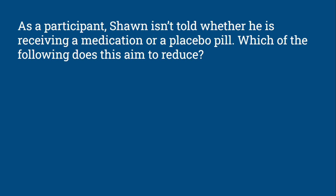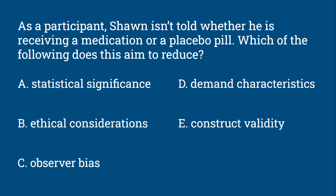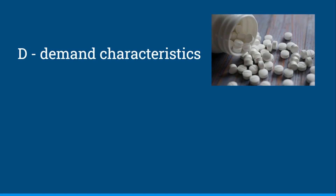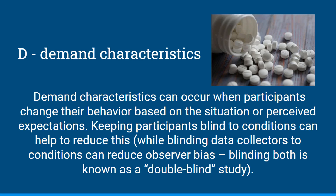As a participant, Sean isn't told whether he's receiving a medication or a placebo pill. Which of the following does this aim to reduce? Does it reduce statistical significance, ethical considerations, observer bias, demand characteristics, or construct validity? The purpose of not telling Sean whether he's getting the medication or placebo is to reduce demand characteristics — situations where participants change their behavior based on perceived expectations. Keeping participants blind to the conditions can help reduce this. We can also blind data collectors to reduce observer bias, and if we blind both, we have what's known as a double-blind study.